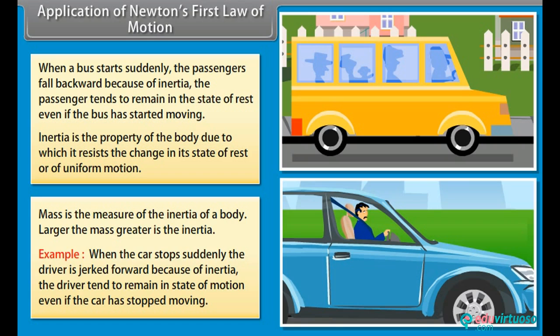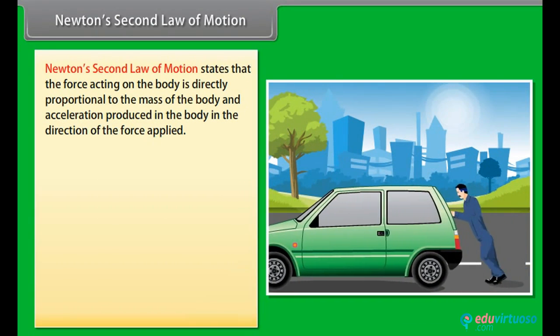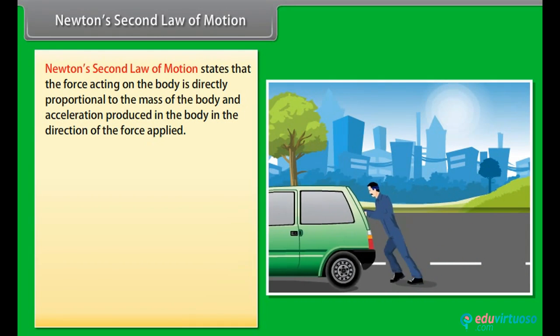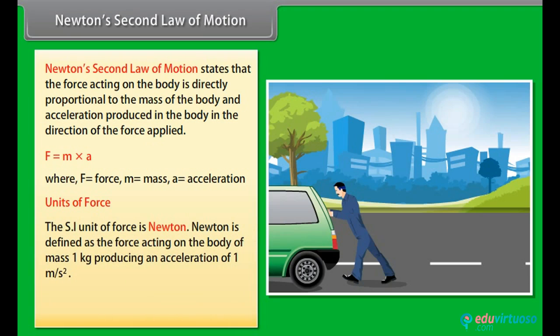Newton's second law of motion states that the force acting on the body is directly proportional to the mass of the body and acceleration produced in the body in the direction of the force applied. F = M × A, where F is force, M is mass, and A is acceleration. The SI unit of force is Newton, defined as the force acting on the body of mass 1 kg producing an acceleration of 1 meter per second square. Unit is kilogram meter per second square or Newton.